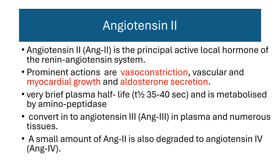Angiotensin 2 is the principal active local hormone of the renin angiotensin system, with prominent actions including vasoconstriction, vascular and myocardial growth, and aldosterone secretion. Its half-life is very short — 35 to 40 seconds — and it is metabolized by aminopeptidase enzyme, converting into angiotensin 3 in plasma and numerous tissues. A small amount of angiotensin 2 is also degraded into angiotensin 4.